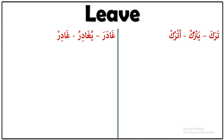We have here two verbs. What's the difference between these two verbs? I can use ترك يترك when I leave places, when I leave things, when I leave people. But غادر — I use it only when I leave places. غادر يغادر. So I use غادر when I leave places.